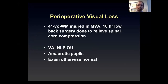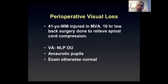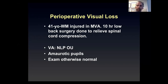Regarding perioperative visual loss: a 41-year-old gentleman had a motor vehicle accident with a back injury, underwent very prolonged low back surgery, and woke up unable to see — NLP OU. His pupils were amaurotic and didn't react to light. There was no relative afferent pupillary defect because he had bilateral symmetric complete optic neuropathy. He had bilateral ischemic optic neuropathy because during the prolonged surgery he lost a lot of blood, had to be resuscitated once when his heart stopped, and unfortunately had permanent bilateral vision loss from bilateral PION.